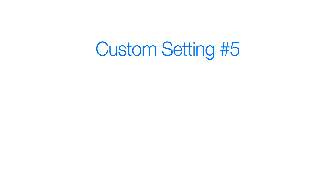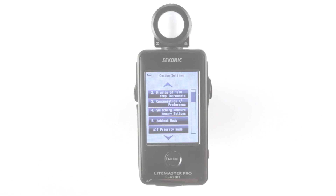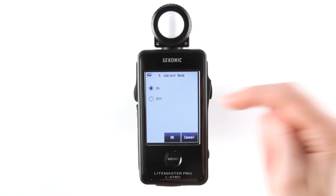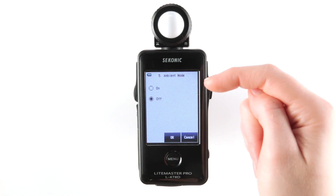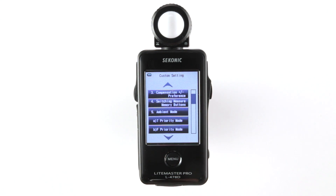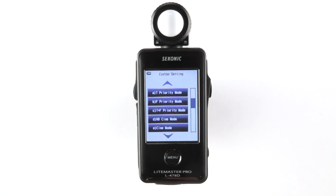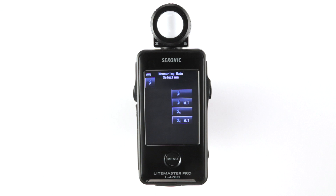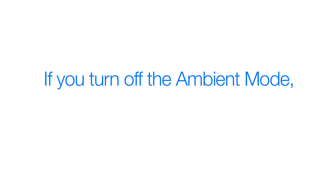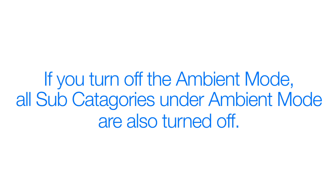Custom setting 5: ambient mode and subcategories. In this custom setting, you can turn various ambient measuring modes on or off depending on your needs. For example, if you only use flash modes, you can eliminate the unnecessary modes for easier operation. Please note, if you turn off the ambient mode, all subcategories under ambient mode are also turned off.